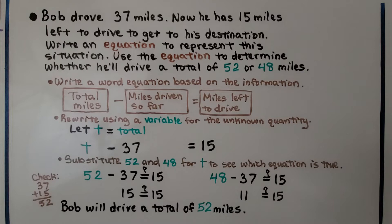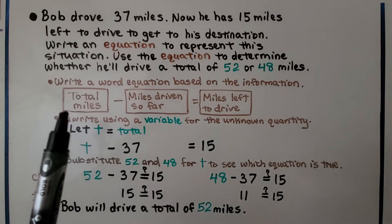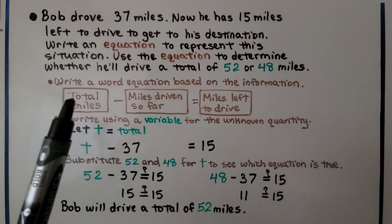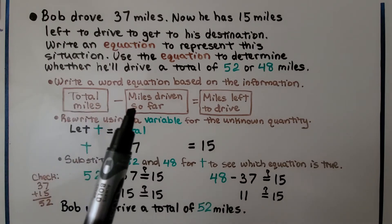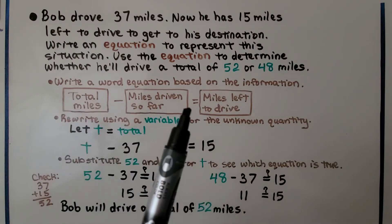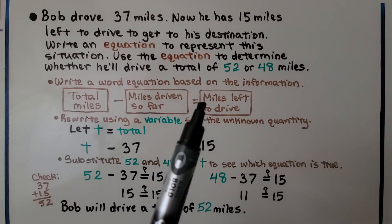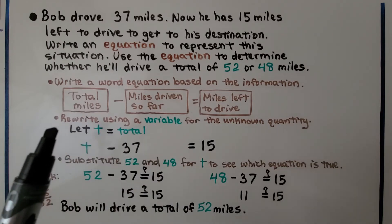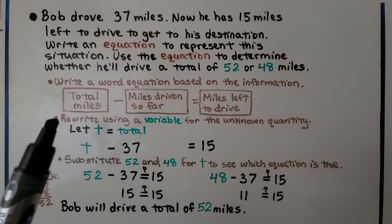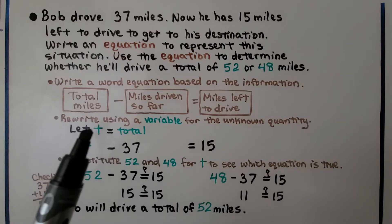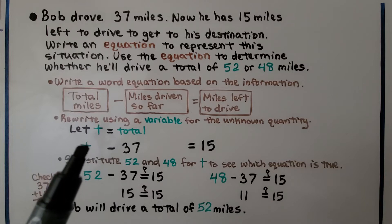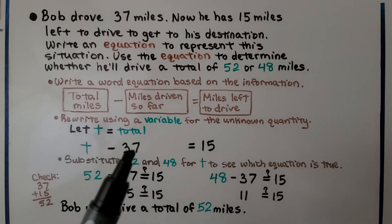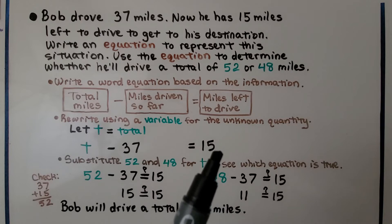We write a word equation based on the information. Here's our model. Here's the total miles. We're going to subtract the miles he's driven so far, and that's going to equal how many miles there's left to drive. We're going to rewrite using a variable for the unknown quantity. So we're going to let t equal total. So we have the total miles, t, minus the 37 miles he's driven, and that's equal to 15.